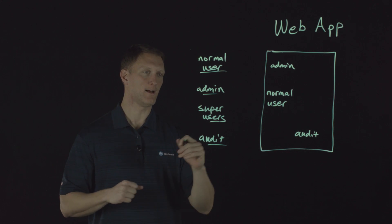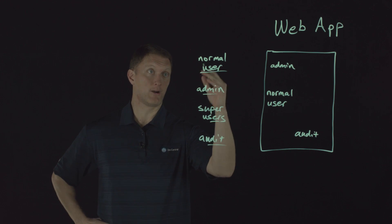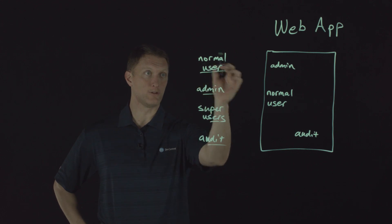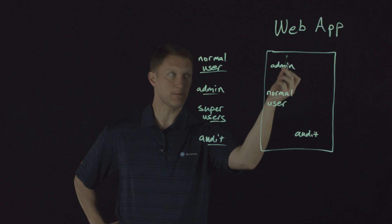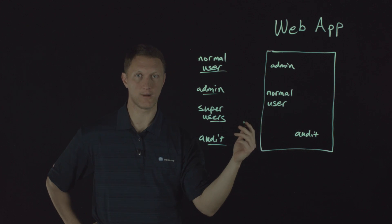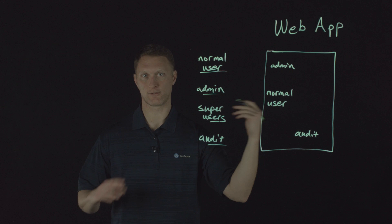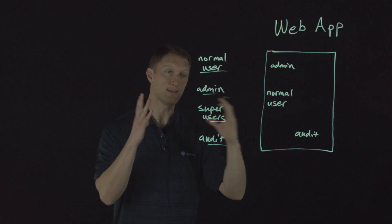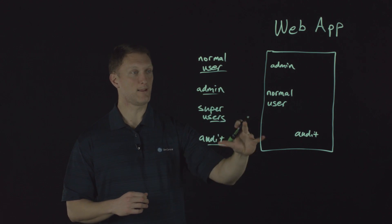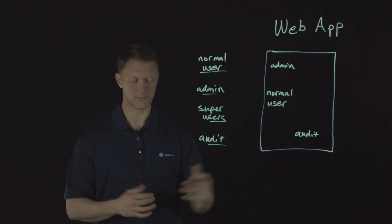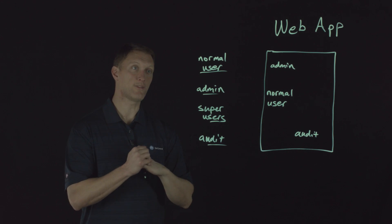One of the things to check for with broken access control — the problem we're talking about today — is where a normal user, or what appears to be a normal user, gains access to admin functions on your web application, or gains access to audit log files. Places they don't need to be. If that happens, the access controls you have put in place are broken.